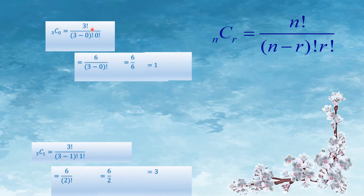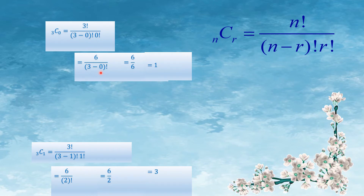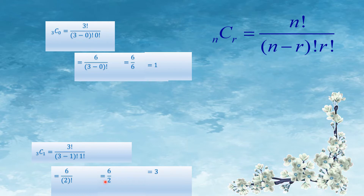We will solve this. 3C0 = 3 factorial divided by (3 minus 0) factorial times 0 factorial = 6 divided by 6 = 1. So 3C0 = 1. 3C1 = 3 factorial divided by (3 minus 1) factorial times 1 factorial = 6 divided by 2 factorial times 1 = 6 divided by 2 = 3.